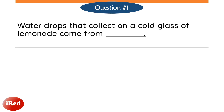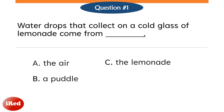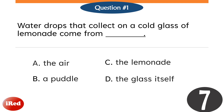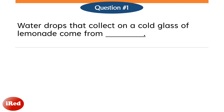Question number one. Water drops that collect on a cold glass of lemonade come from: Letter A, the air; Letter B, a puddle; Letter C, the lemonade; or Letter D, the glass itself. The correct answer is Letter A, the air.